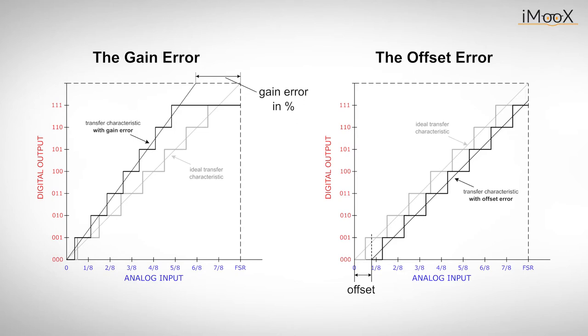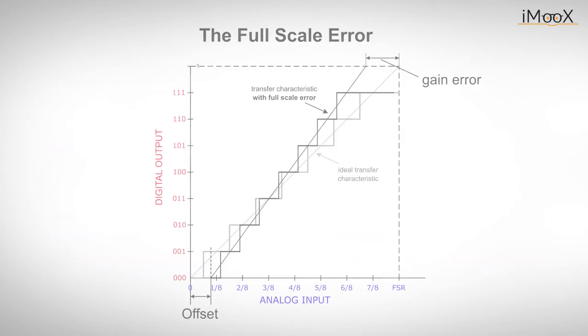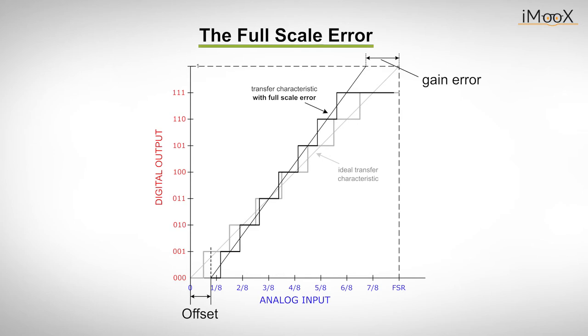Data sheets often also mention the full-scale error. The full-scale error simply equals the sum of the offset error and the gain error, as shown in this figure. Both gain and offset error are constant errors and can be eliminated by appropriate calibration.